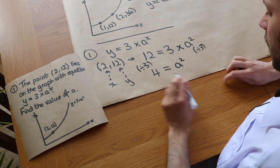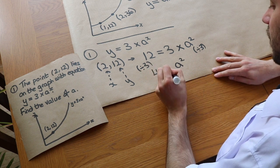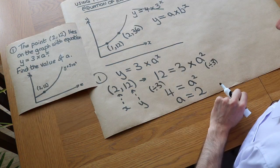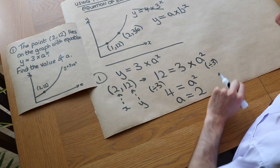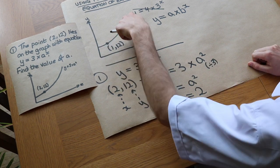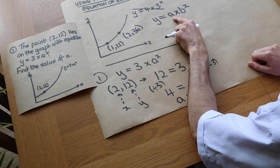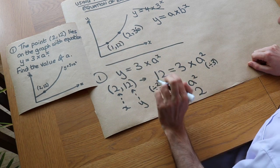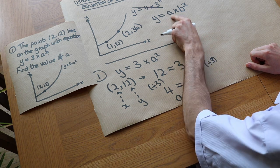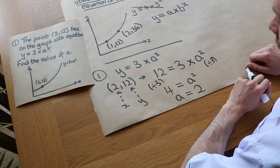Square rooting both sides gives a equals 2. We might think a could also be minus 2, but because this graph always has positive y values, a must be positive. In GCSE questions, a and b will always be positive. So a equals 2 and we're done.